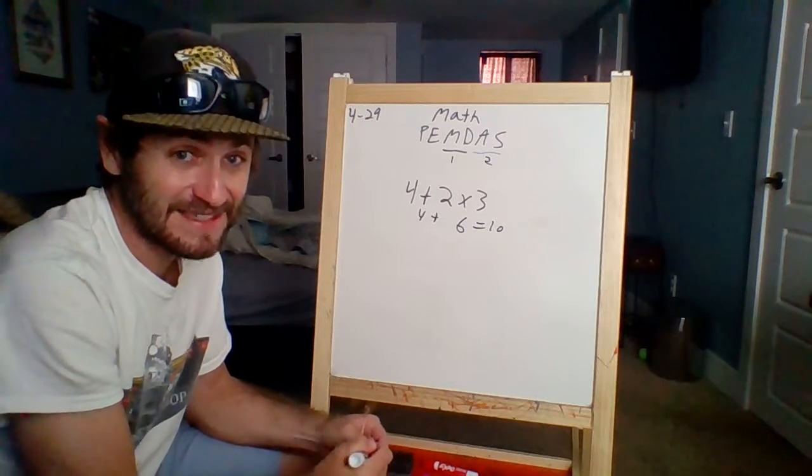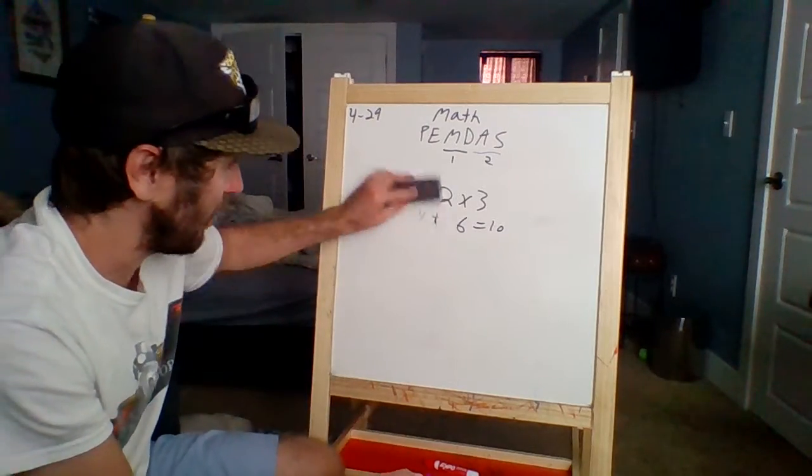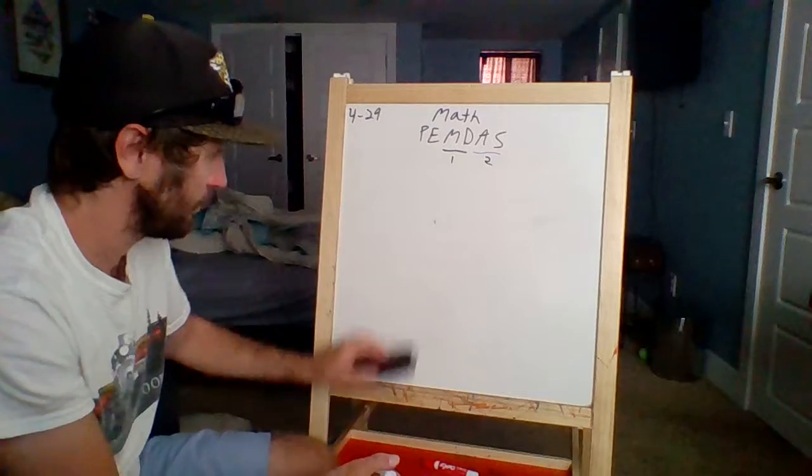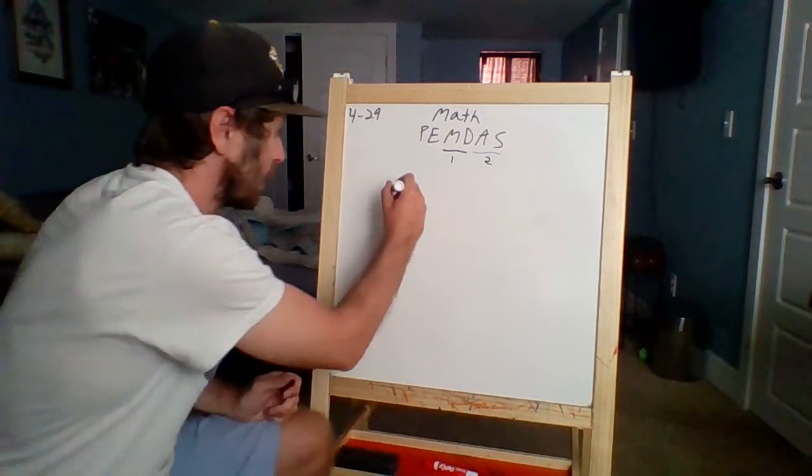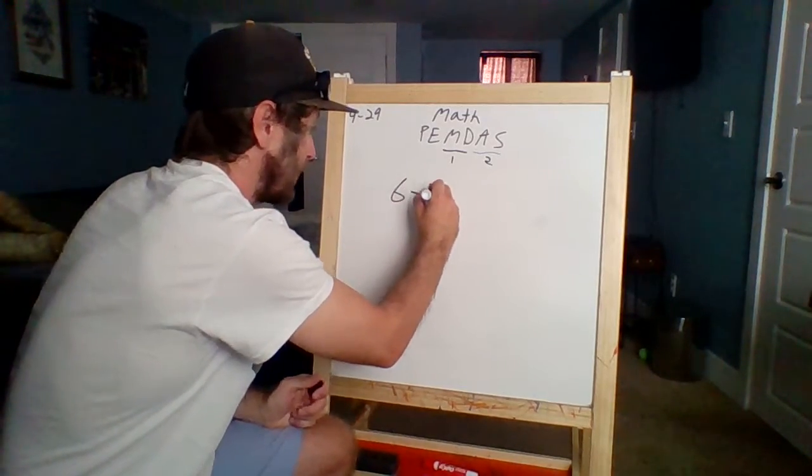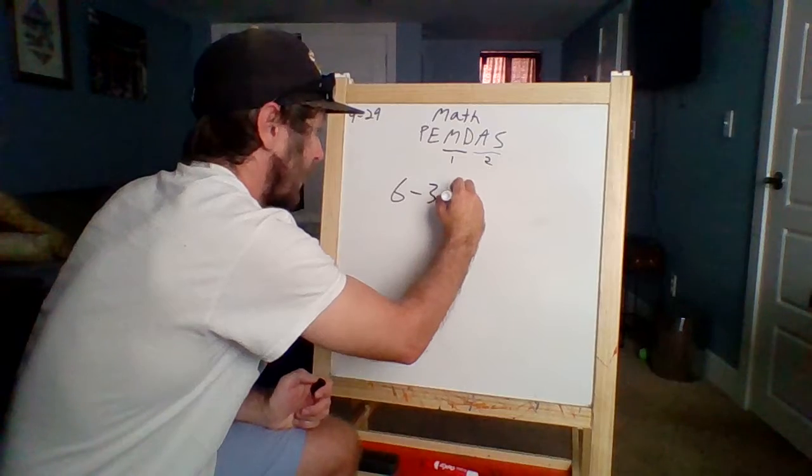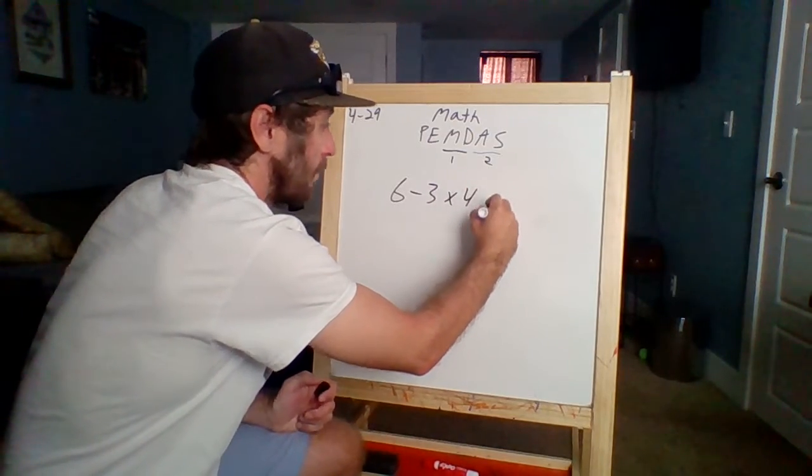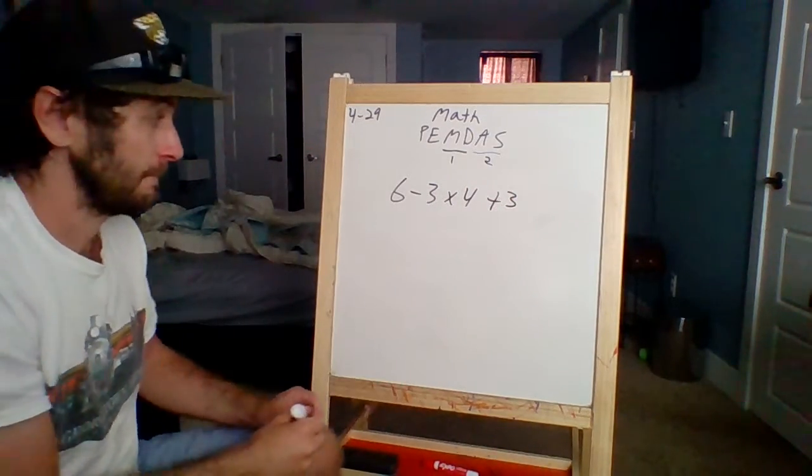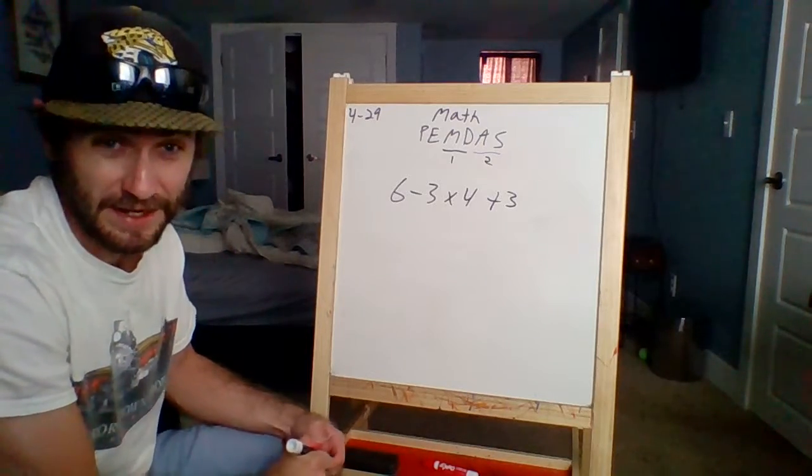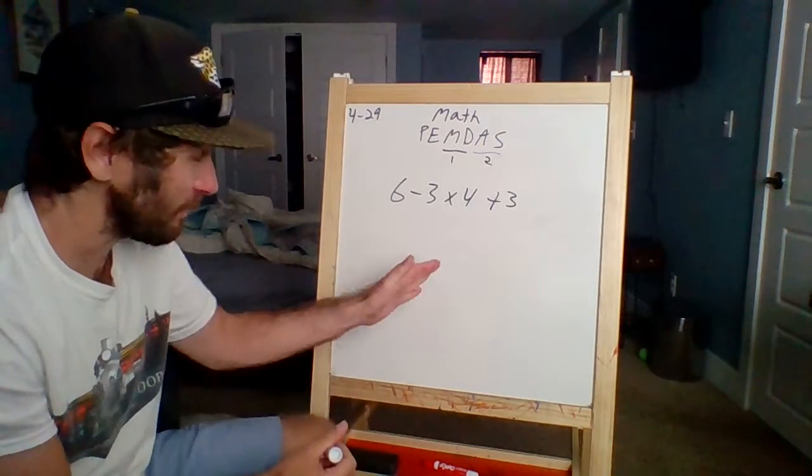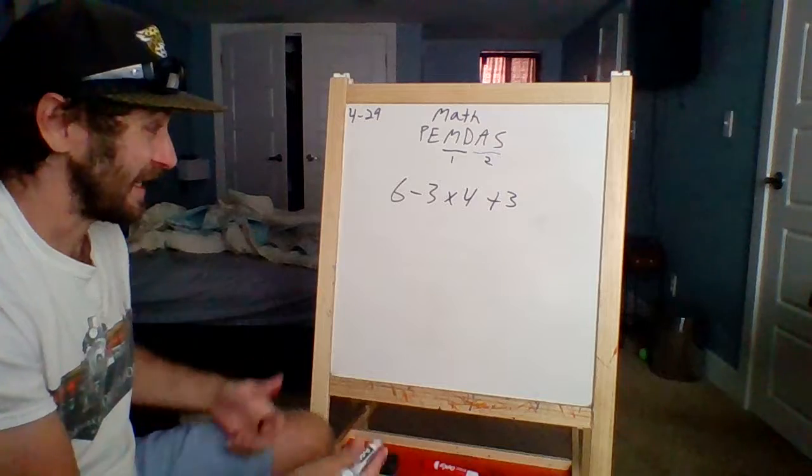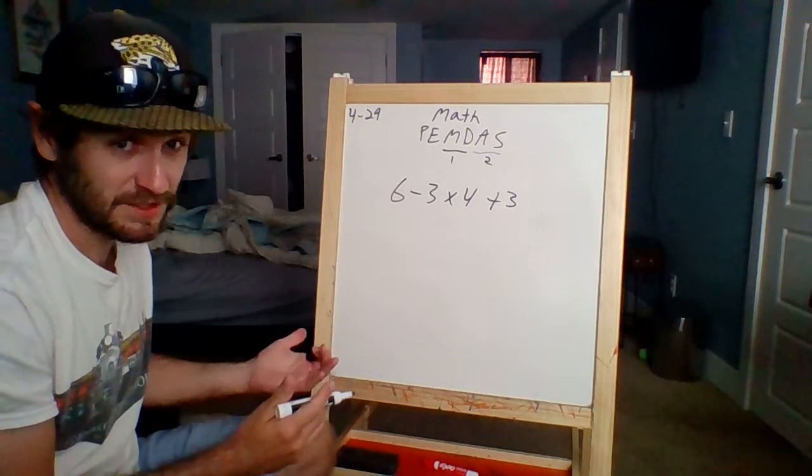We've got to stay in that order. Let's check another one here. Six minus three times four plus three. Gets kind of tricky, right? A lot of numbers. I've got four different numbers. And I've got to do, what do I got to do first?